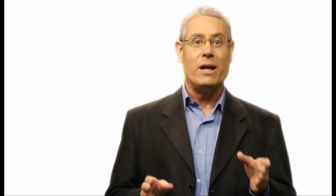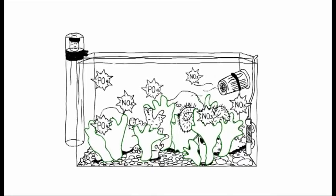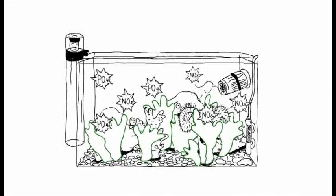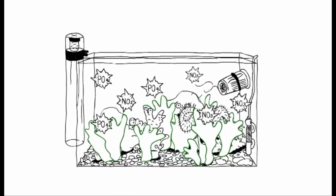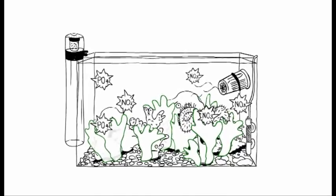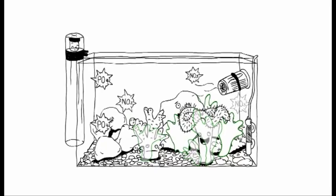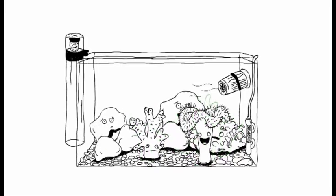The Algae Management Program is all about setting and maintaining the desired levels of nitrate and phosphate, which are algae nutrients and therefore have a significant effect on all algae in the reef aquarium. We want to get rid of the nuisance algae that can quickly overrun a tank, but we also need to look after the beneficial symbiotic zooxanthellae algae that are essential for all so-called photosynthetic corals.